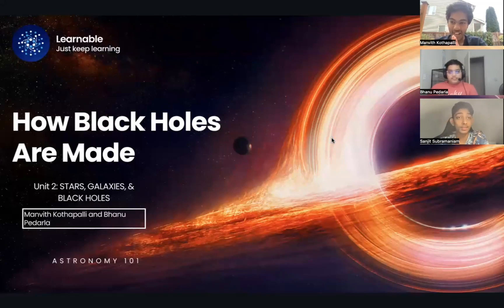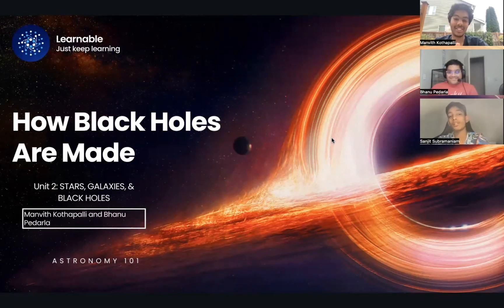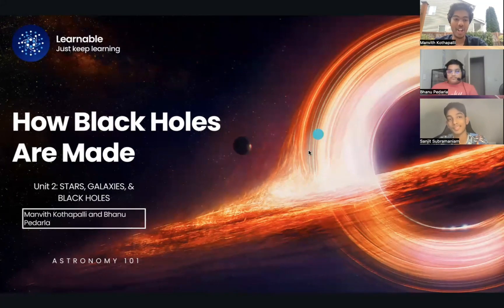Hello everyone, my name is Manvit. I'm Sanjit. And I'm Banu. And today we're going to be talking about how black holes are made in unit two of Astronomy 101. Unit two just talks about stars, galaxies, and black holes. And this is our last video of unit two. Next unit, we'll be talking about the solar system, our home. So let's get started.